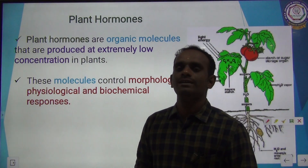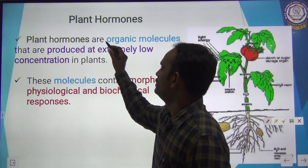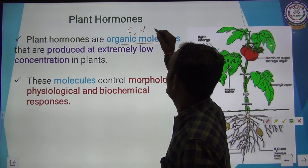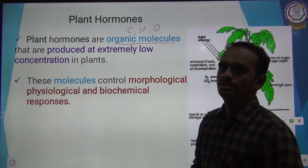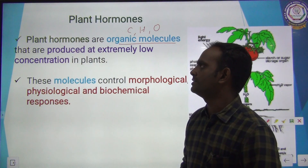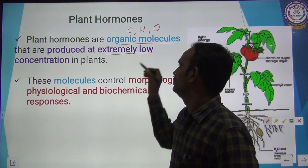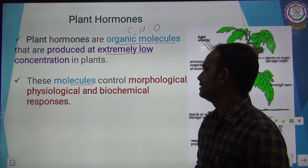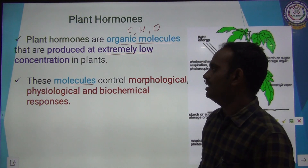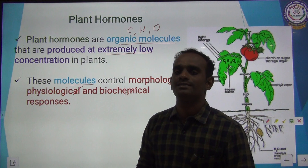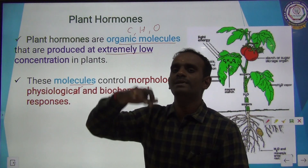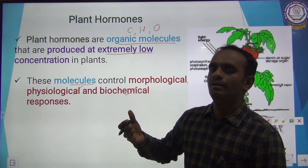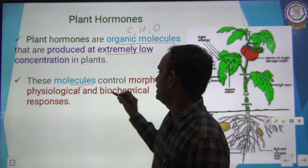Plant hormones are organic molecules — organic molecules meaning made up of carbon, hydrogen, and oxygen. Plant hormones are produced at extremely low concentration in plants. These organic molecules control morphological, physiological, and biochemical responses. Morphological response is nothing but physical appearance and growth. Physiological response refers to metabolic functions, and then there are biochemical reactions.